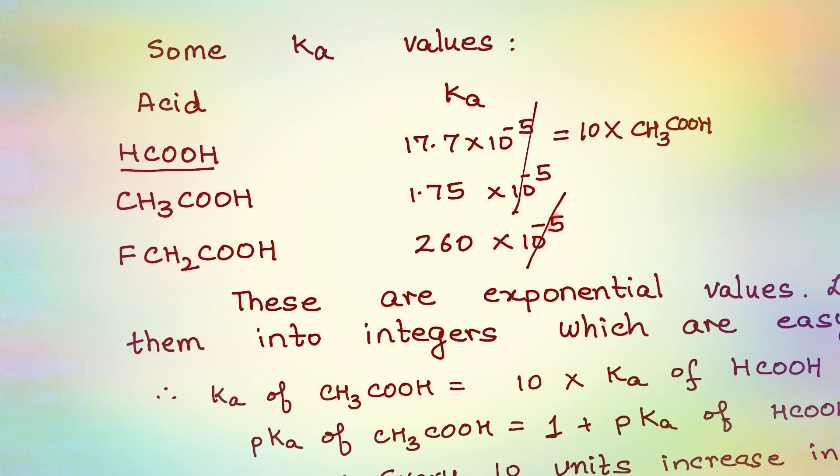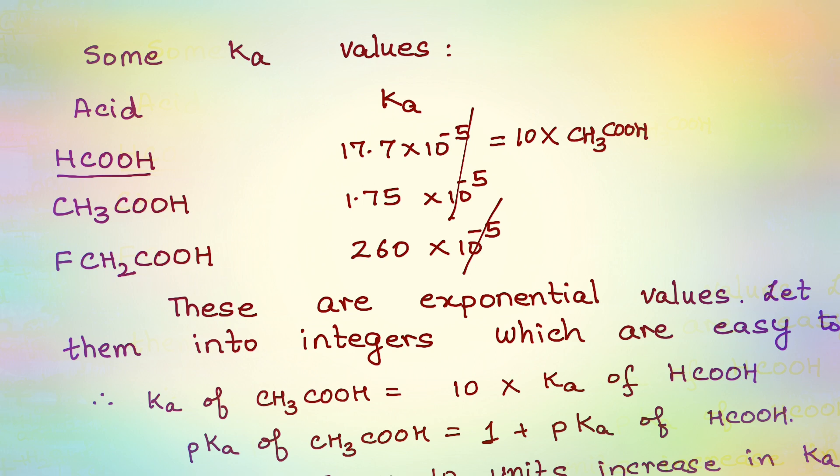Now dealing with these kind of exponential values is not easy; it gets confusing. Here I have put all the exponential values in 10-5. Supposing you have to deal with some values as 10-7, one is 10-5, the other is 10-9. Honestly I get confused.